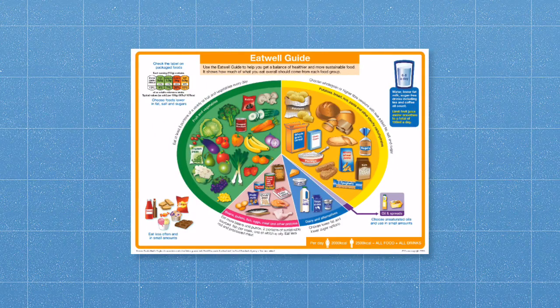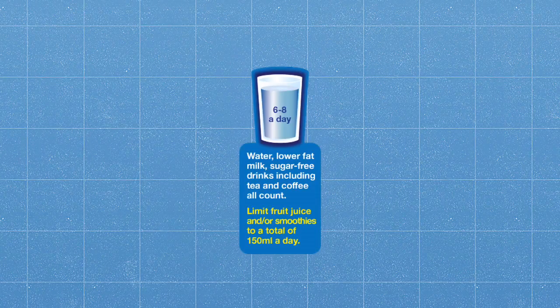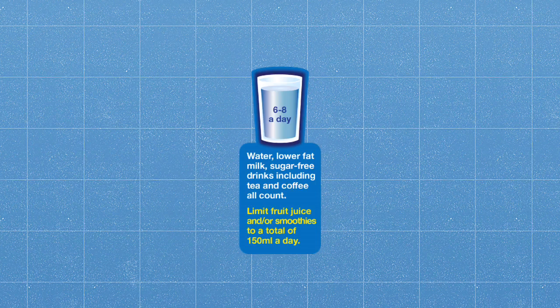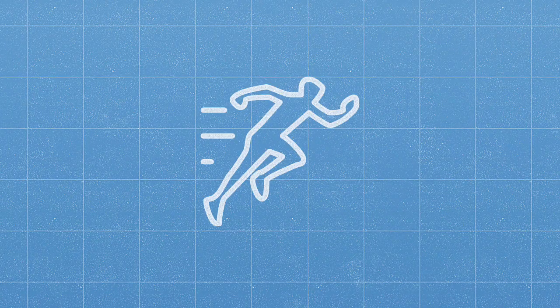The Eat Well Guide is the UK's healthy eating model which helps us make healthy choices about foods and drinks. The Eat Well Guide recommends we drink six to eight glasses of fluid a day. You may need more during hot weather or if you are very active.